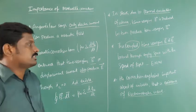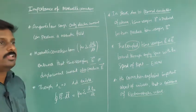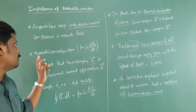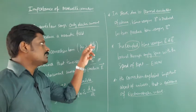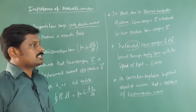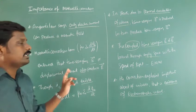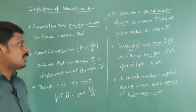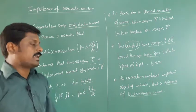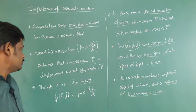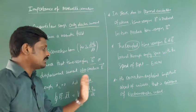Ampere's law says only electric current can produce a magnetic field. But the Maxwell correction term, mu-0 epsilon-0 — that is the change in electric flux with respect to time — ensures that a time-varying electric field, or displacement current, also produces a magnetic field. So though the conduction current is zero, the displacement current exists.